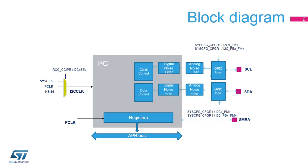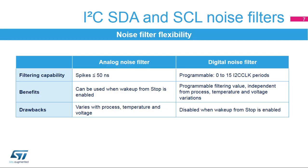Here is the I2C block diagram. The registers are accessed through the APB bus, and the peripheral is clocked with the I2C clock, which is independent from the APB clock. The I2C clock can be selected between the system clock, APB clock, and the high-speed internal 16 MHz RC oscillator. Analog and digital noise filters are present on the SCL and SDA lines. A 20mA driving capability is enabled using the control bits in the system configuration registers. In addition, an SMBUS alert pin is available in SMBUS mode.